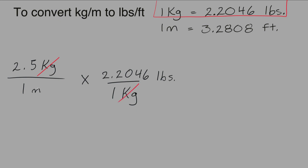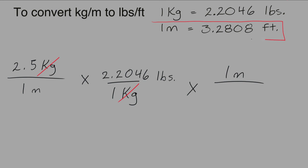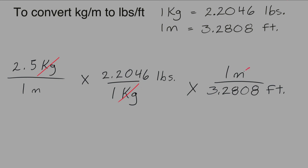The next thing we'll want to do is convert the meters to feet. So we'll place the meters on the top of the fraction so it can be cancelled. From our conversion factors we know that one meter is equal to 3.2808 feet, so now the units of meters can be cancelled. What we have left is pounds in the numerator and feet in the denominator.